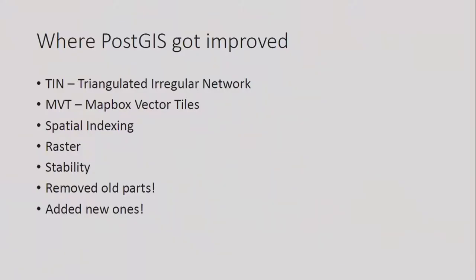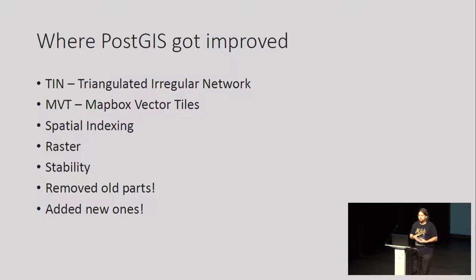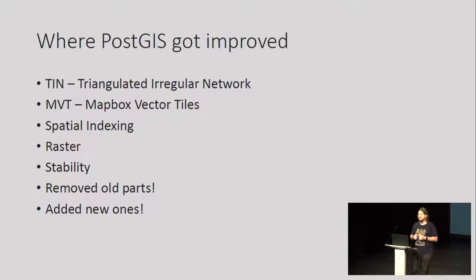I was kidding that it would be reading the changelog aloud — I moved the entries around in the changelog. Everything was done in parallel. I was focused on TINs, the triangulated irregular networks. Raul was doing the Mapbox vector tiling. There were some improvements in spatial indexes. There is a major change in raster, which I'll talk about later. We also greatly improved the stability of PostGIS.